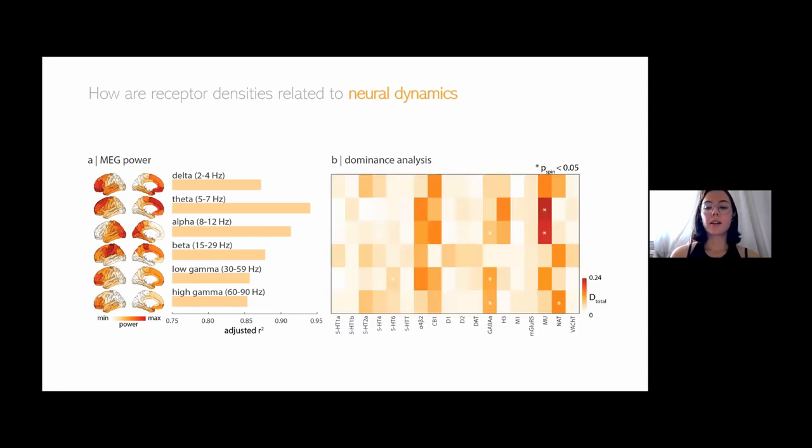Then we apply dominance analysis to this model. Dominance analysis is a technique that takes this fit, the adjusted R squared, and distributes it to different input variables. You can think of the sum across every row as the sum of the dominance across every row would give you the final adjusted R squared. This explains which receptors, which input variables are most dominant, mostly contributing to this fit between dynamics and receptor distributions.